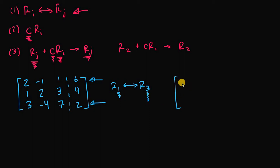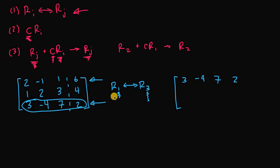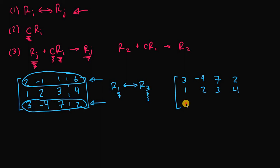Row one is interchanged with row three, so the new row one is what row three was initially: 3, -4, 7, 2. Row two doesn't change: 1, 2, 3, 4. And row three becomes what row one was initially: 2, -1, 1, 6.